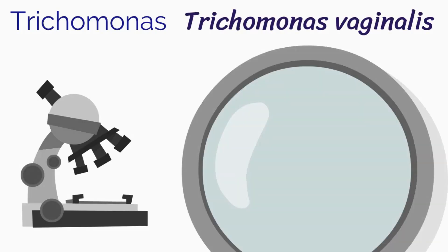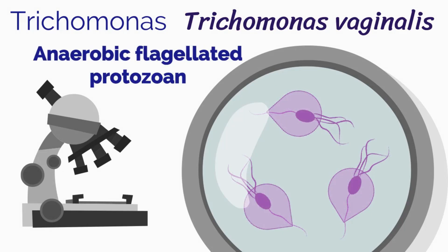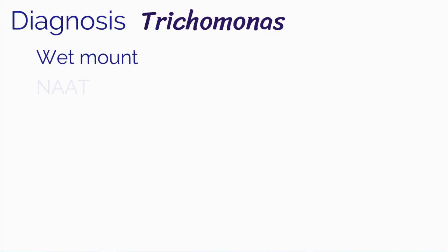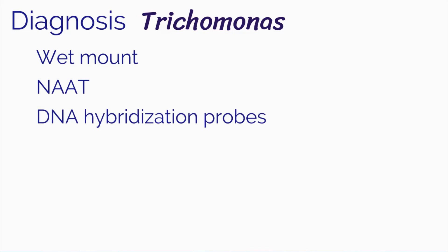The wet mount you obtain screens for Trichomonas. It is caused by Trichomonas vaginalis and is an anaerobic flagellated protozoan. It is pear or round-shaped with four anterior flagellae. On wet mount, Trichomonas moves with a jerky and spinning motion. Pathogenesis is not well understood, but the protozoan primarily infects the squamous epithelium of the urogenital tract. Besides wet mount, Trichomonas can also be diagnosed with NAAT, DNA hybridization probes, and rapid antigen tests.